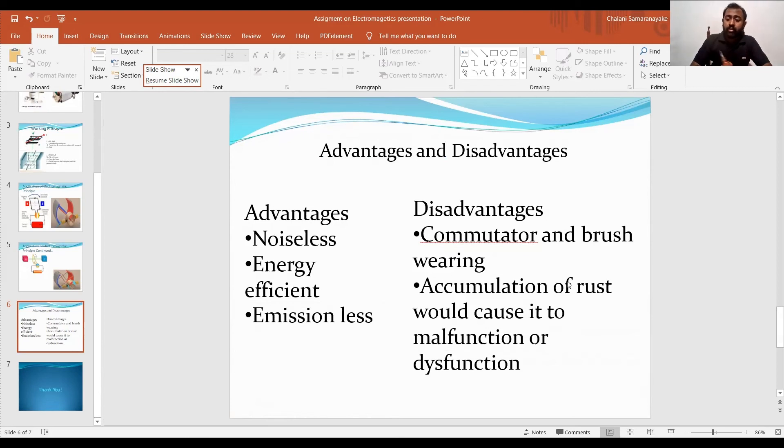To speak about the disadvantages, if you take a closer look at the commutator, there is this black line. This black line is because of those compressed carbon blocks. They have been wearing with time, so they will be wearing. That's why we have this black line. And you can see all over this electric motor that it's rusted. Because it is rusting, this will cause this electric motor to dysfunction.